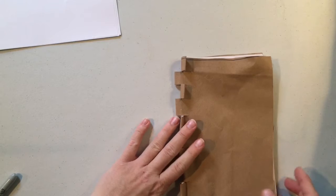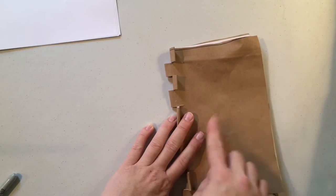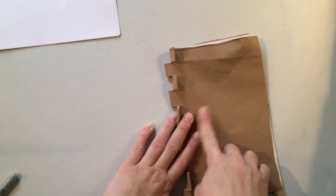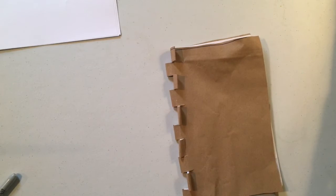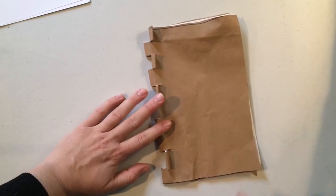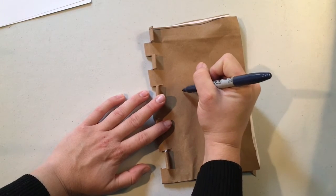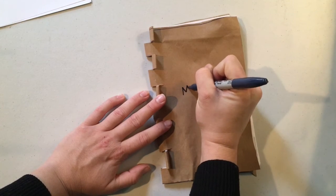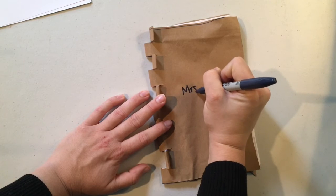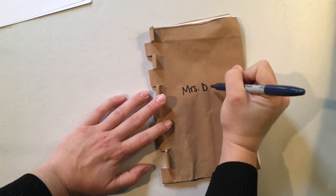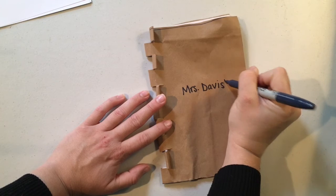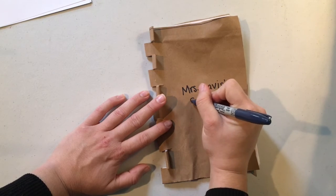Now what I'm going to do is I'm going to draw on the front cover and write Mrs. Davis's sketchbook. And then I'm going to add different types of lines on it. I want to decorate my front cover and I'm going to do like a Zentangle design.